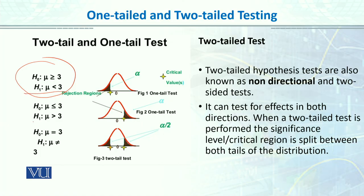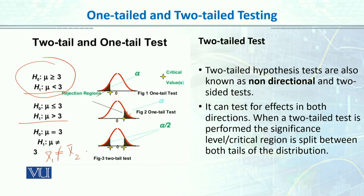If you say that mu is greater than 3, then your result falls on that tail. We have also said that girls are better, or girls are not better — that is the other way around, and we do it on one-tail. But if we say mu is not equal to 3, or that there is no difference between boys and girls — meaning mean 1 is not equal to mean 2 — then we use a two-tail test.